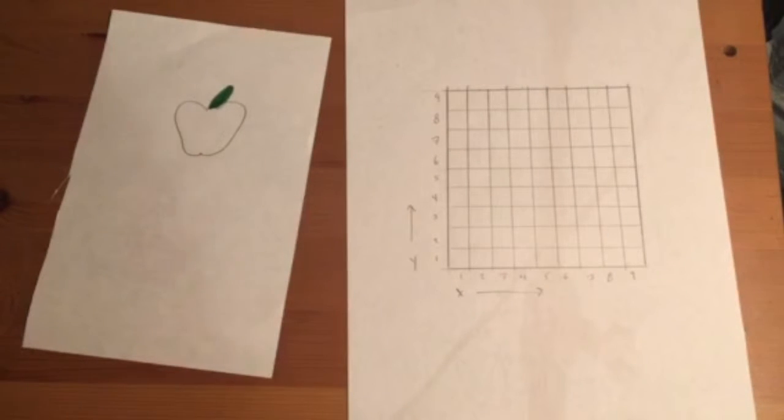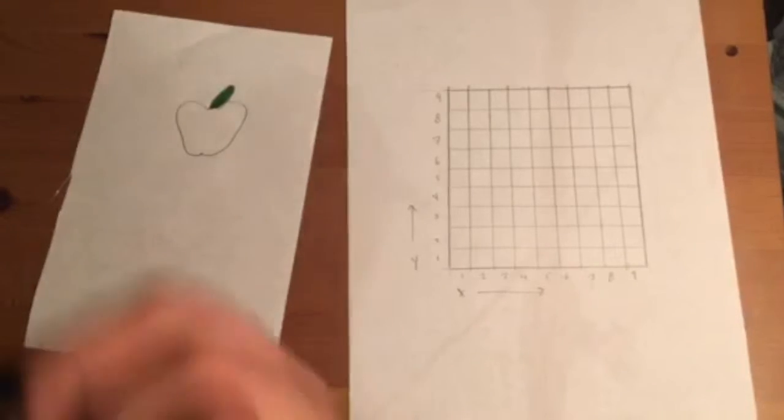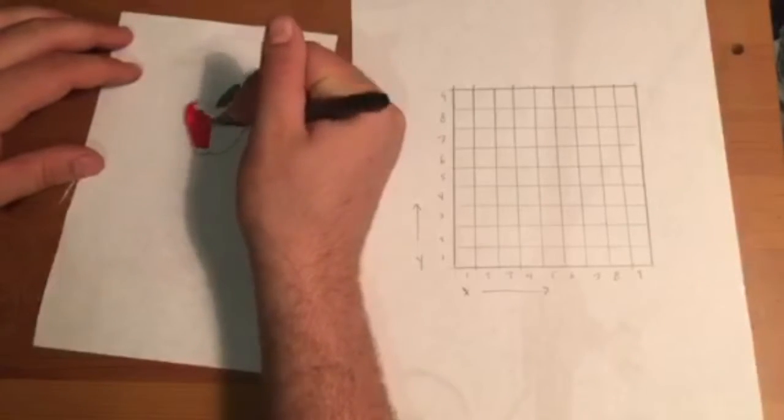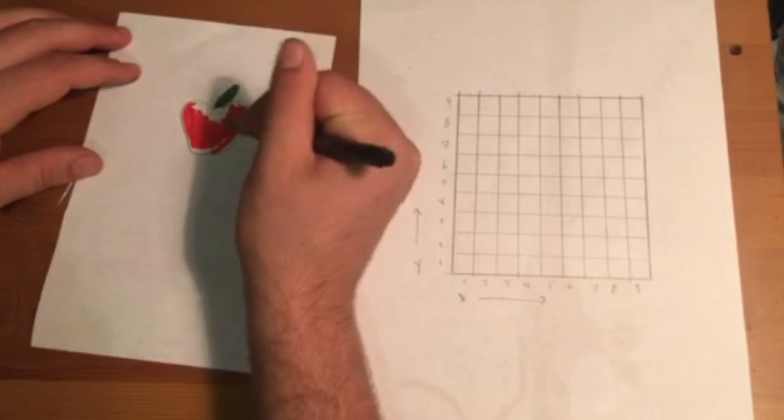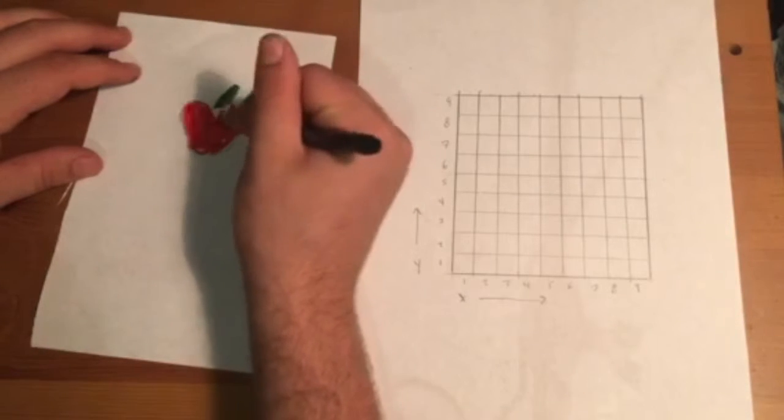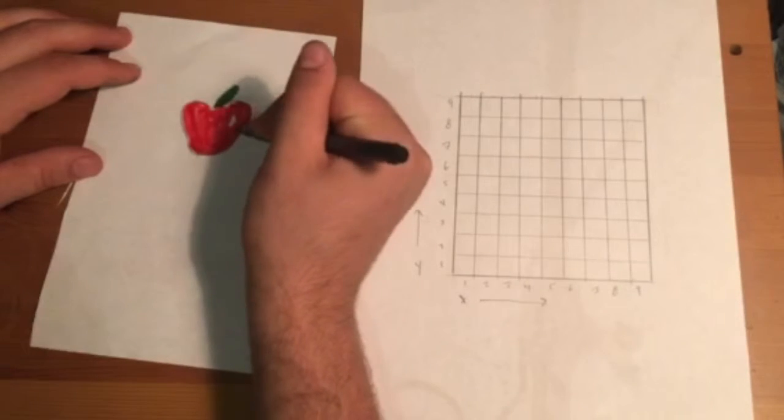So you may first want to take a piece of scrap paper and plan out the piece of art you'd like to make. Remember to keep your design simple as we're working on a small grid and you will only have two colors available to you to complete your design.